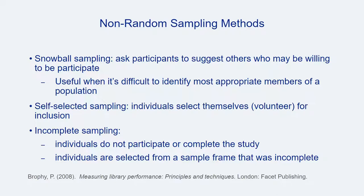Three other non-random sampling methods include snowball sampling, self-selected sampling, and incomplete sampling. In snowball sampling, initial participants suggest others who may be willing to participate. Self-selected sampling is what it sounds like — participants volunteer to be included in the assessment. Incomplete sampling can refer to a variety of kinds of incompleteness, such as when individuals in the sample do not participate, or the sampling frame was not a complete census of the population.